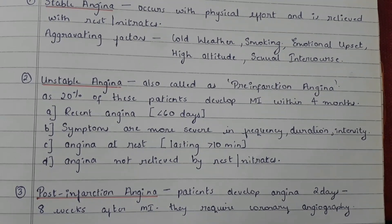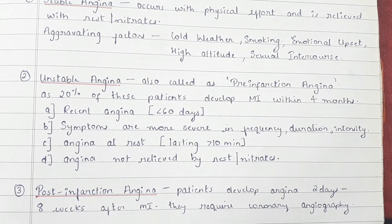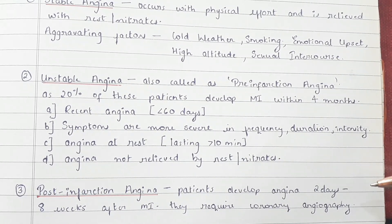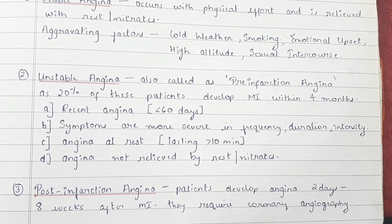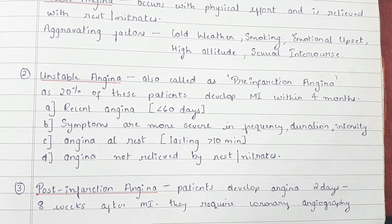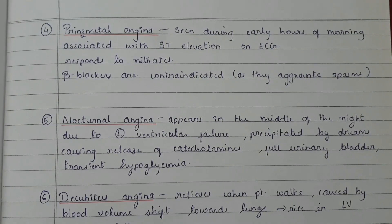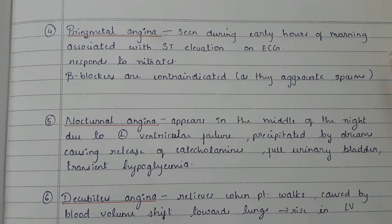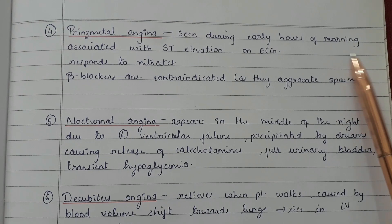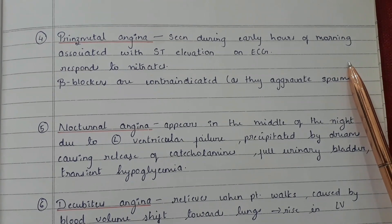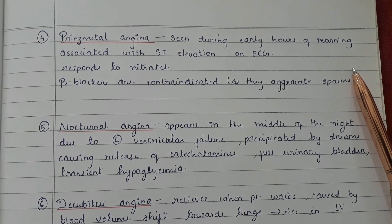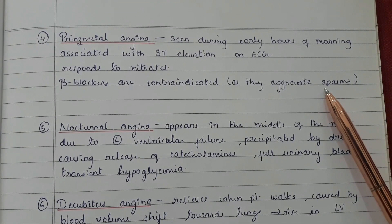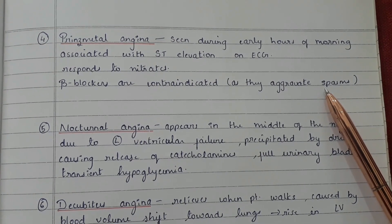The third type is post-infarction angina. Patients develop angina within 2 days to 8 weeks after MI and require coronary angiography. Prinzmetal angina is seen during the early hours of the morning, associated with ST elevation on ECG. It responds to nitrates, but beta blockers are contraindicated as they aggravate spasms.